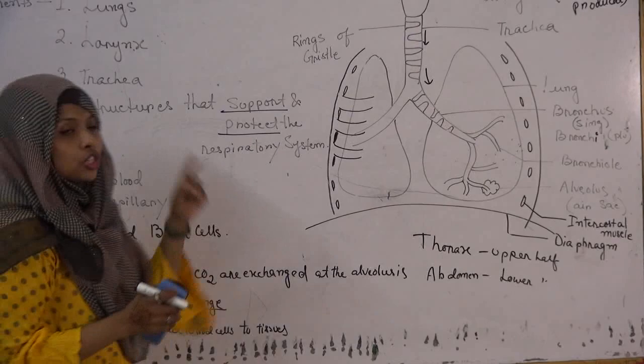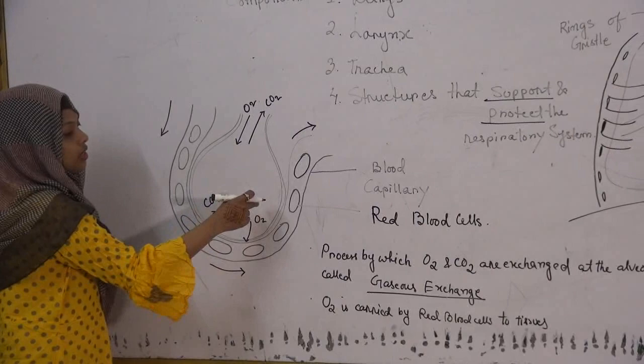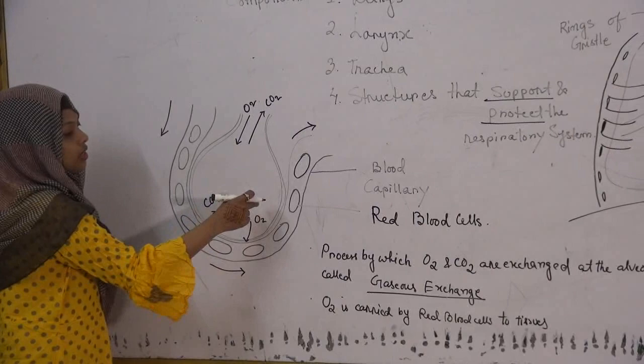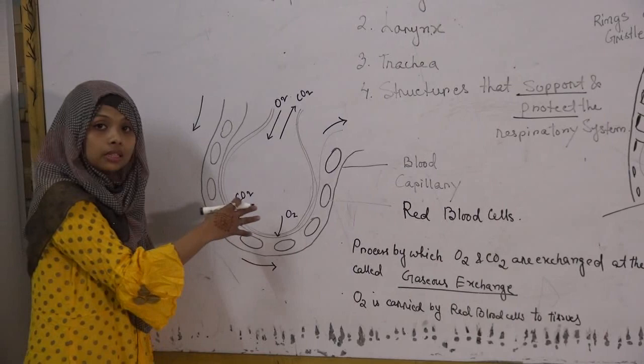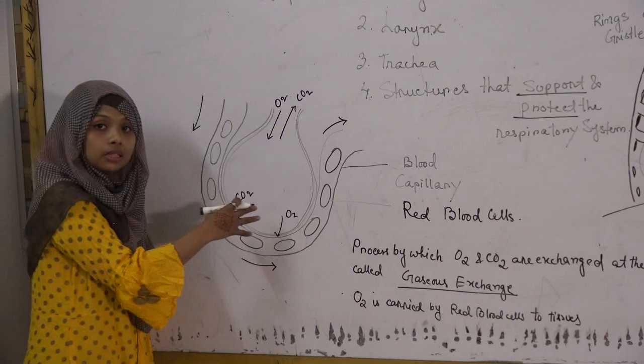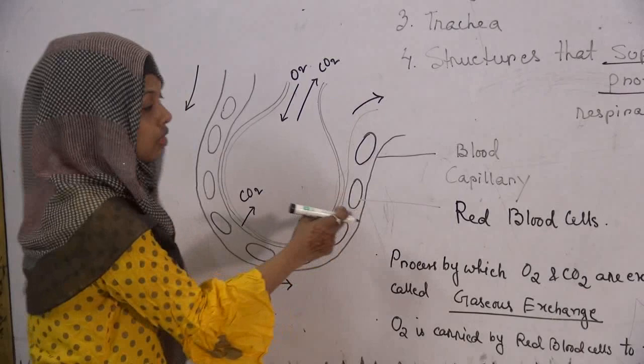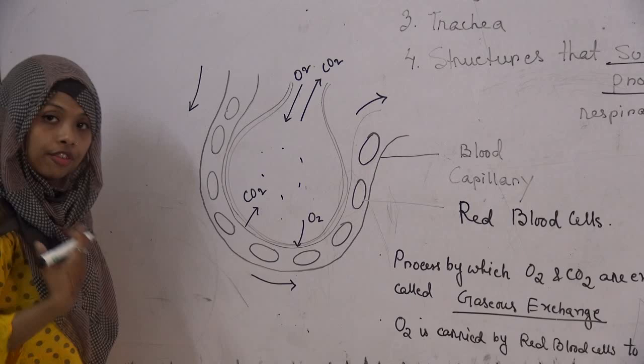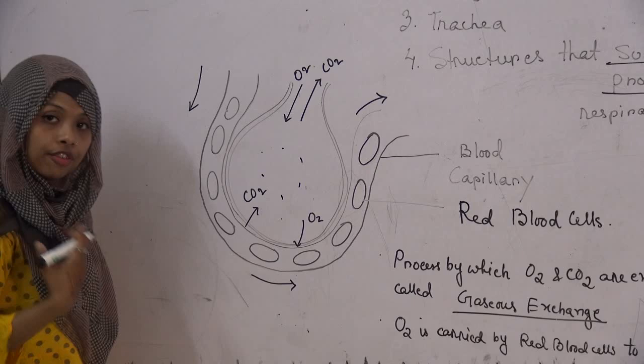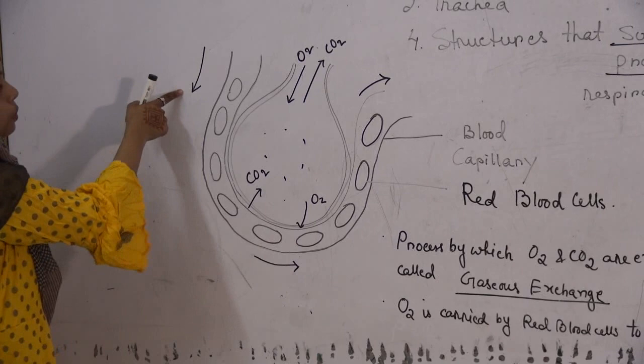Now let's take a look at just one alveolus — we are going to enlarge it and see what is basically happening there. I have drawn one alveolus and a blood capillary. There are many blood capillaries surrounding each alveolus, but for simplicity we have taken one blood capillary. In the blood capillary there are different types of blood cells — predominantly red blood cells. Every time you take in air, it is full of oxygen which enters the alveolus, and every time you breathe out, carbon dioxide is let out.